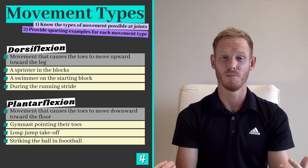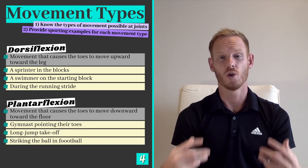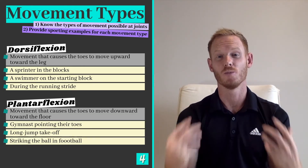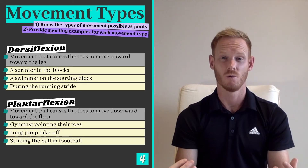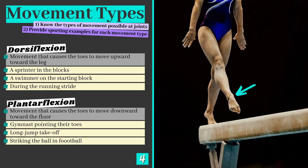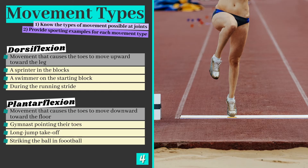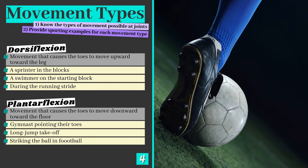Plantarflexion is the opposite movement and causes the toes to move downwards towards the floor. Plantarflexion can regularly be seen in gymnastics, is essential for generating extra momentum when taking off in long jump, and can be seen when striking the ball with the laces in football.